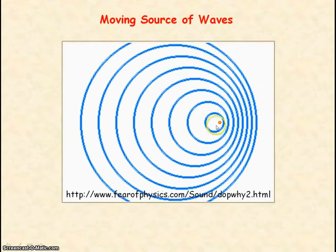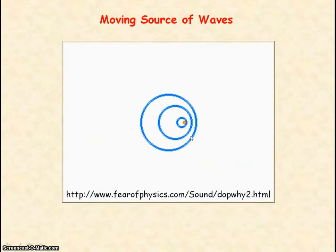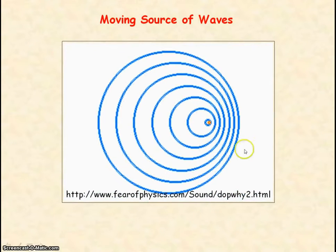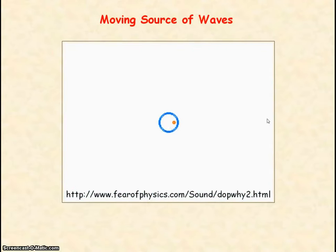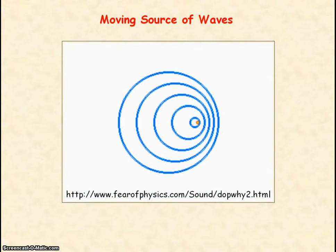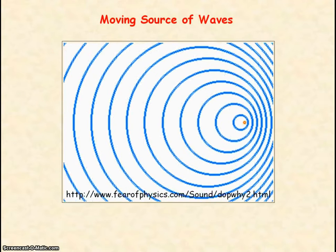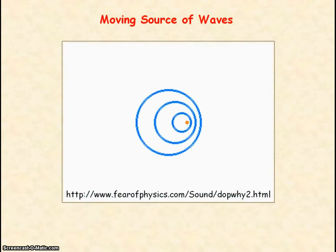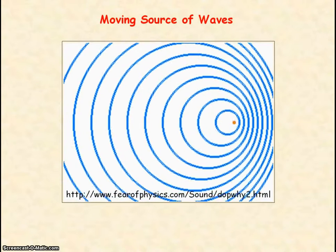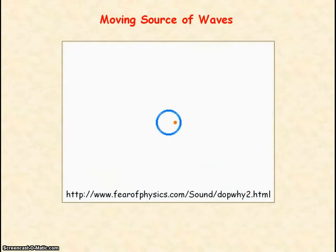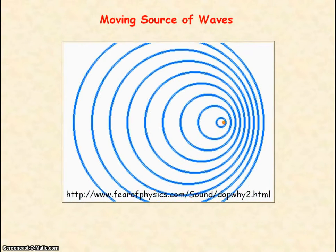Here you have a moving point source of waves emitting waves of frequency f. If you have an observer placed in front of the point source, the observer will detect a higher frequency, and that's because as the point source is moving towards the observer, the observer will receive each wave front in less time.